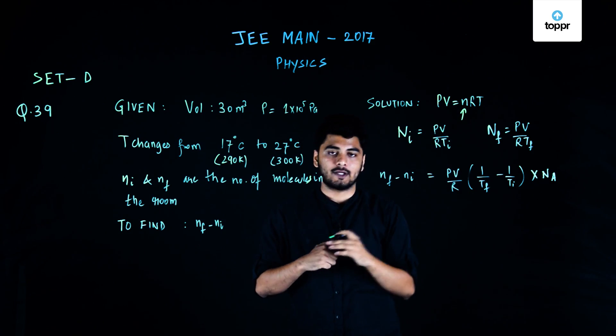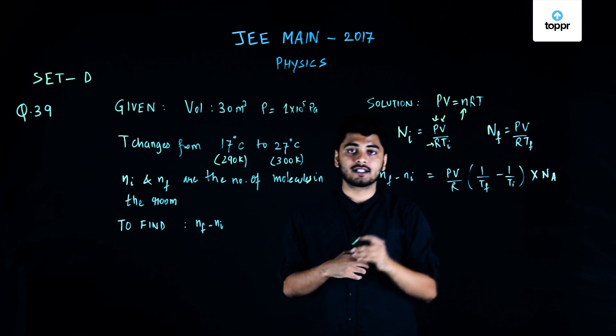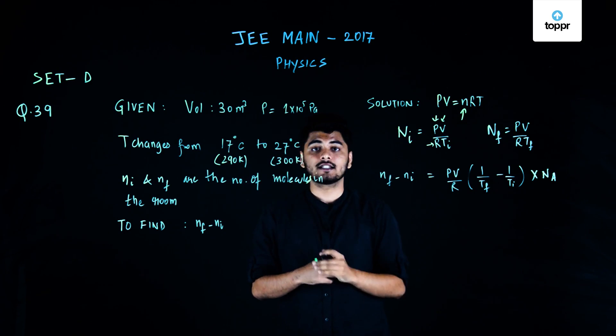So, going by the formula PV is equals to nRT, we know for sure that P, V and R would not change. Pressure, volume and the gas constant would not change.